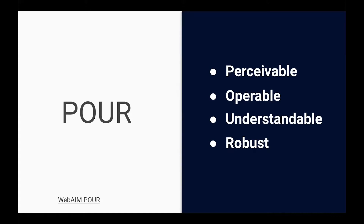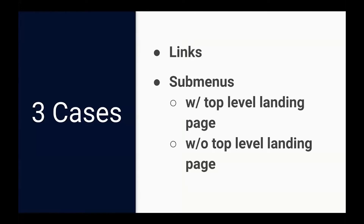For the menu to be understandable, it should behave in a predictable way, maintaining visual and auditory consistency. For instance, if an icon toggles between two states such as open and closed, it should do that predictably, and menu items should announce themselves predictably for screen reader users. For robustness, we wanted to ensure the menu would work at least to some degree without JavaScript, keeping the style and user experience approximately the same as if JavaScript were available.